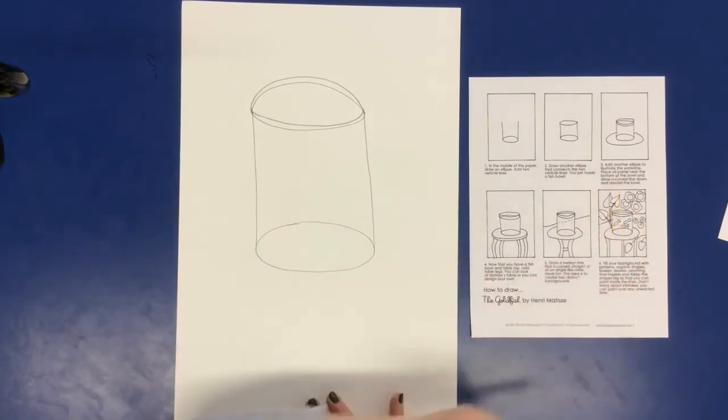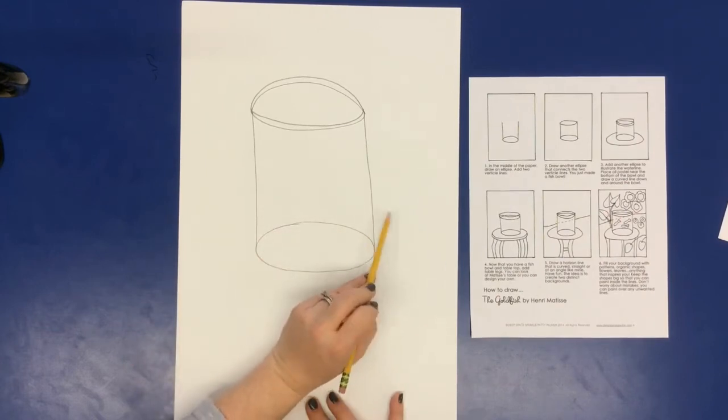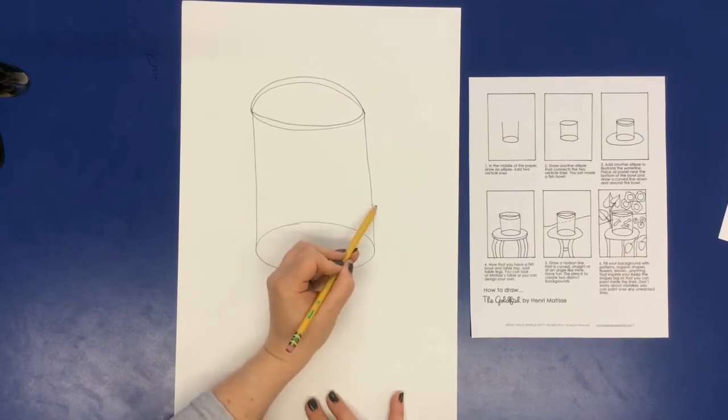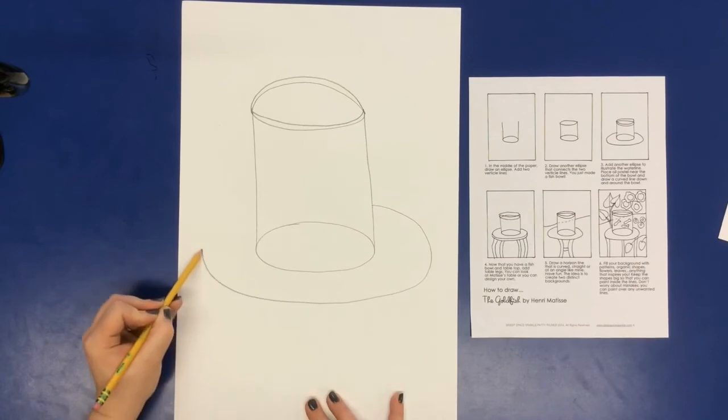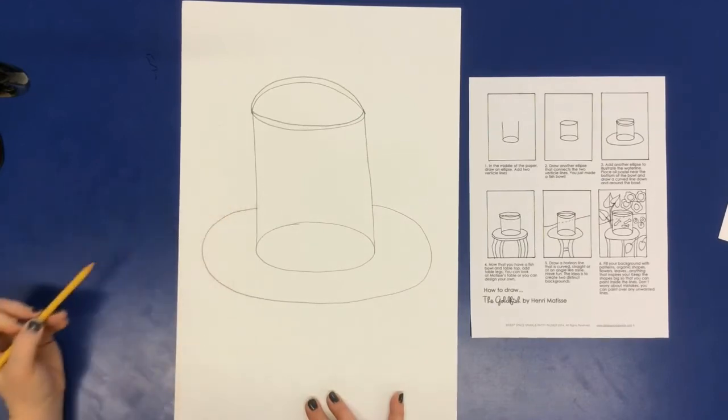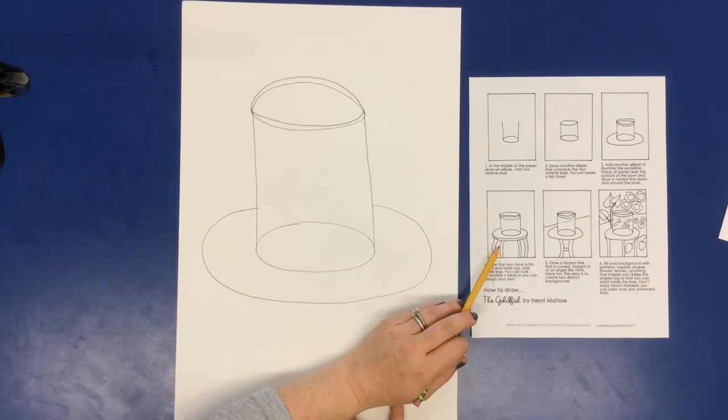Now the next thing we're going to do is step three. And here, starting at the outside of your fish bowl, we're going to do a big kind of curve and come back up.